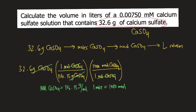So why do we need to convert moles to millimoles? Because in the problem, we are given the concentration of calcium sulfate, which is 0.00750 millimolar. Millimolar is equal to millimoles per liter, so 0.00750 millimolar is the same as 0.00750 millimoles per liter.